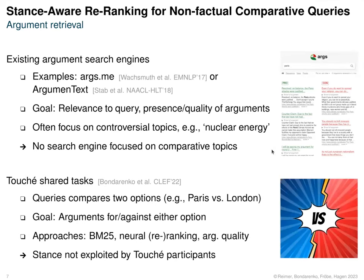But luckily, there's a shared task at CLEF called Touche, where each query compares exactly two options — for example, Paris versus London. And also here, the goal is to retrieve arguments for or against either option. Not only argument quality matters, but also the stance. And in this shared task, participants have so far used BM25, neural re-ranking and also incorporated argument quality, but they did not exploit the stance up to now.